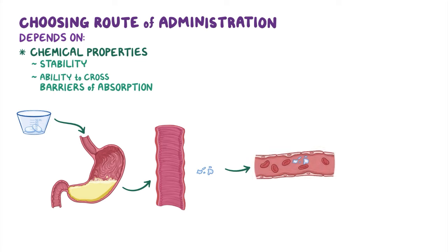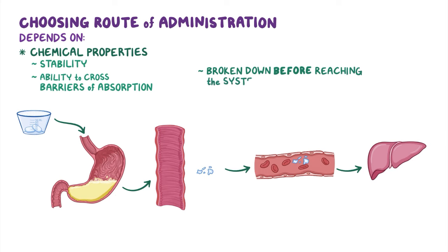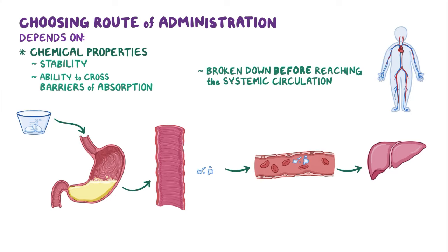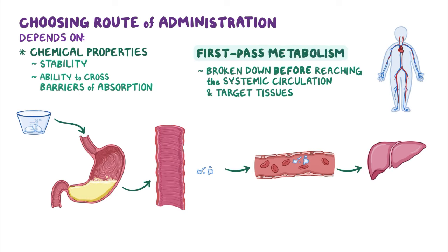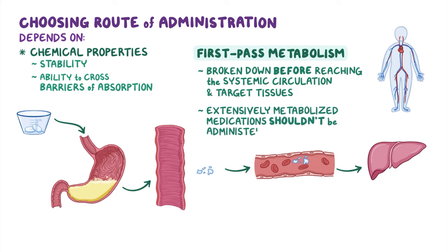In addition, blood coming from the gastrointestinal tract is first directed to the liver, where many medications get broken down or metabolized before gaining entry to the systemic circulation. This means medications are metabolized before they even get a chance to reach their target tissues — this is known as first-pass metabolism, or the first-pass effect. So medications that get extensively metabolized into inactive forms through that first-pass shouldn't be administered parorally, as it would decrease their efficacy.